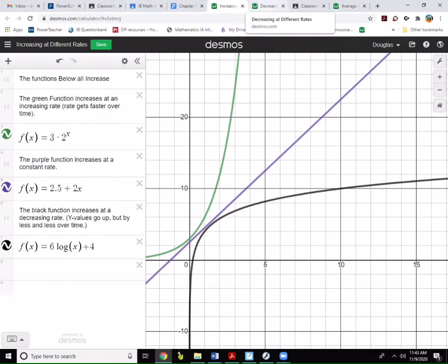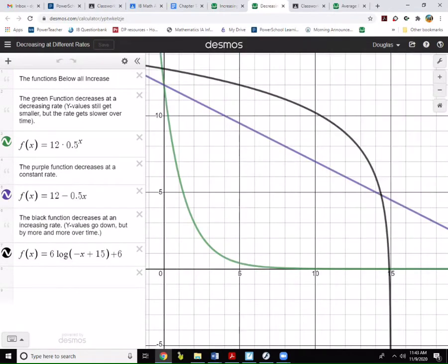Now functions can also decrease as we go. In other words, as x goes up, y's go down. So all three of these functions are in fact decreasing functions. However, the purple function shows decrease at a constant rate, the green function shows decrease at a decreasing rate.